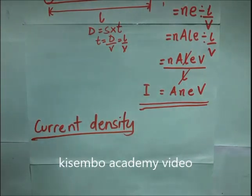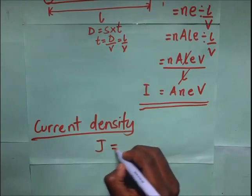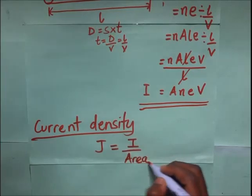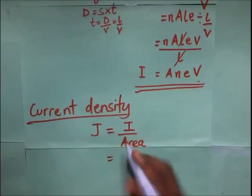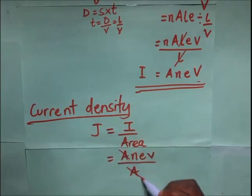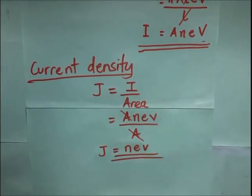Let's look at the last concept: current density. Current density is the current flowing per unit cross-sectional area of the conductor at right angles to the direction of flow. Current density is denoted by J. From our definition: J = I / A. Since I = A·n·e·v, dividing by A gives us current density J = n·e·v.